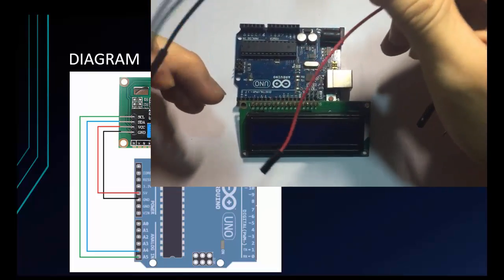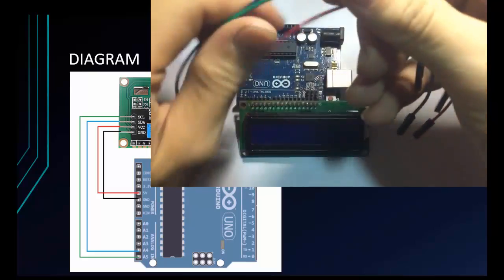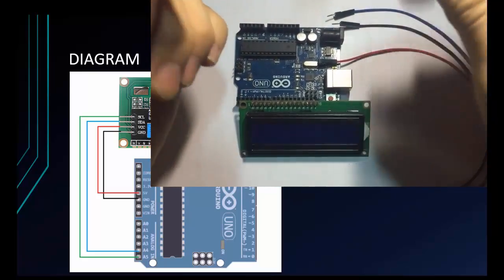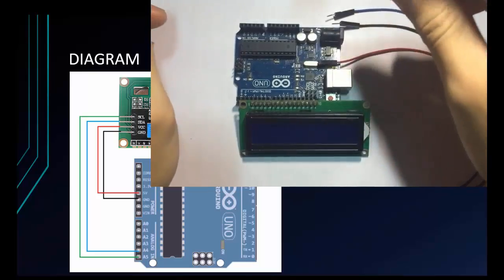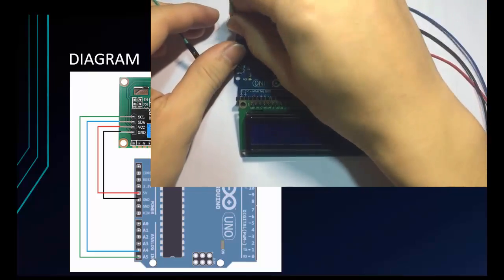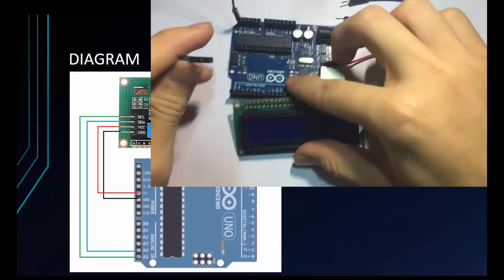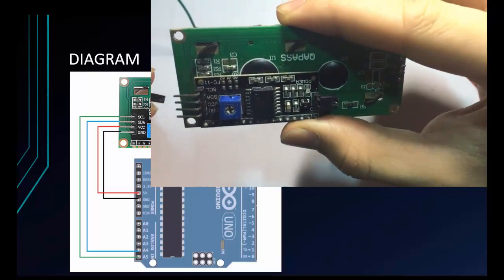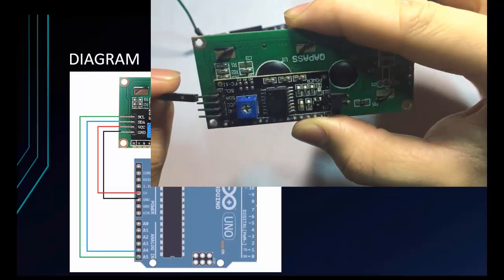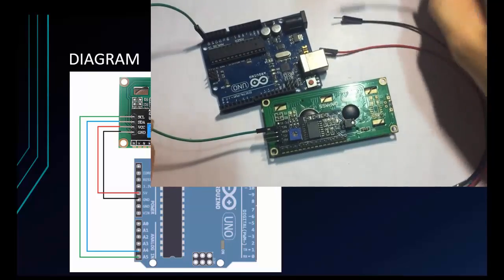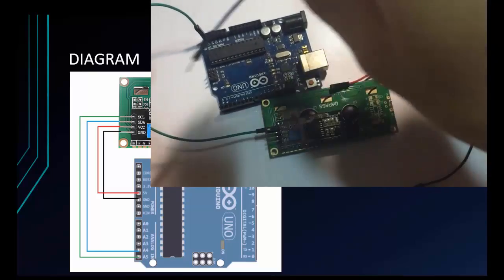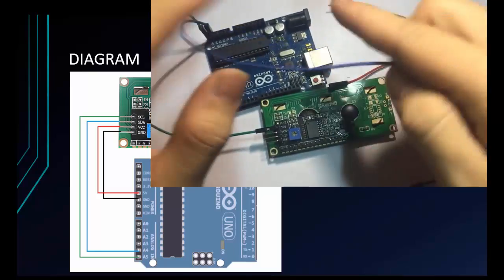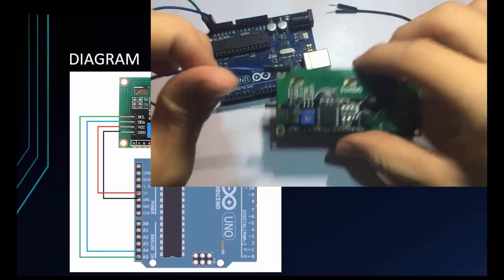Now I will connect to my LCD. The green wire is SCL, connecting to A5. Next is SDA, connecting to SDA on the module.